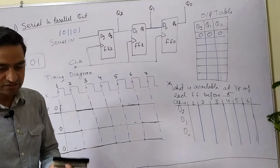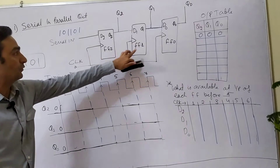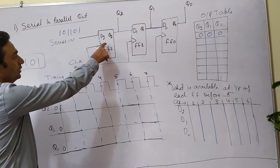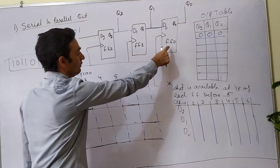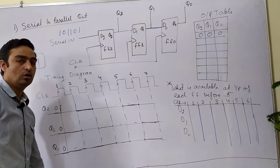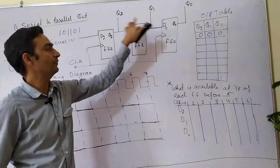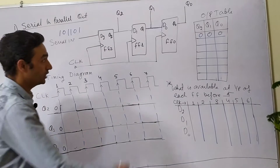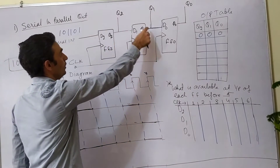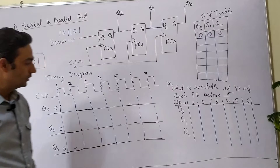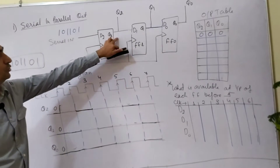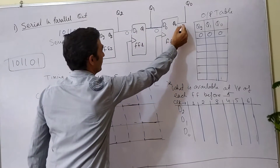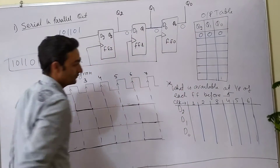Now let us find out that initially all the flip-flops are reset. We are assuming delay flip-flop 2, delay flip-flop 1, and delay flip-flop 0, all connected in the same configuration as the Serial In Serial Out shift register. The only difference is that here output is observed for each flip-flop. Initially Q2, Q1, Q0 are all 0, and this is the initial output of each flip-flop.